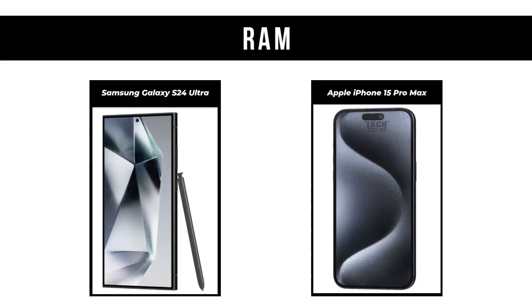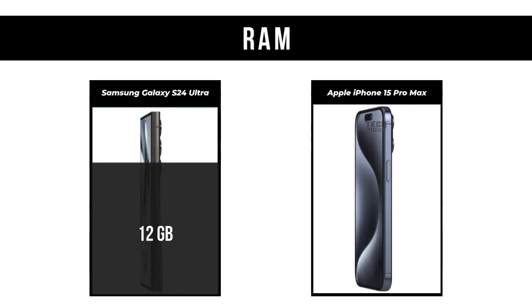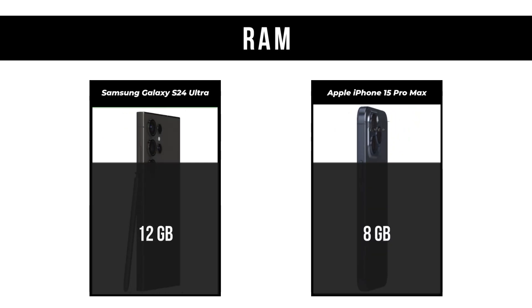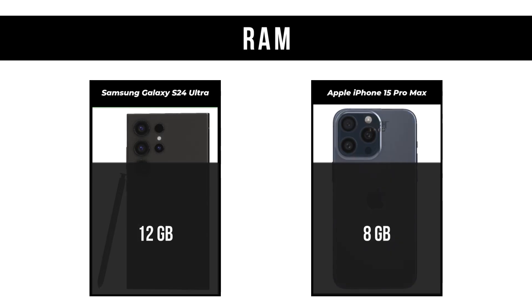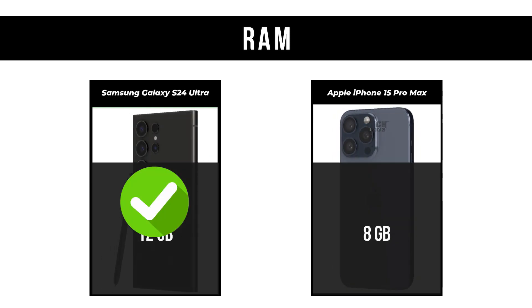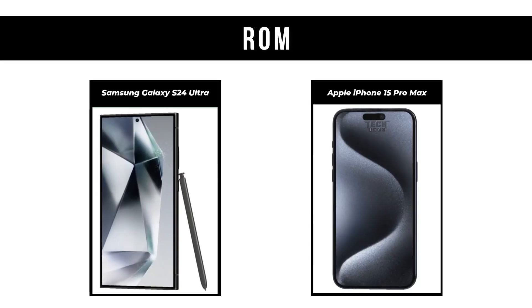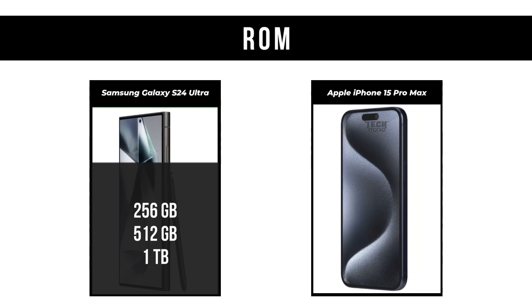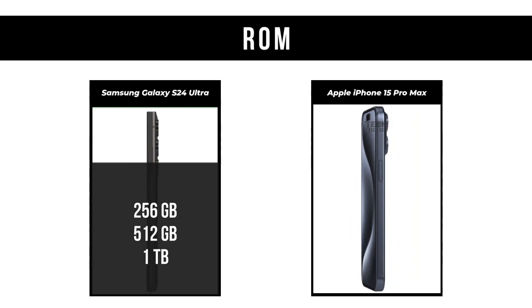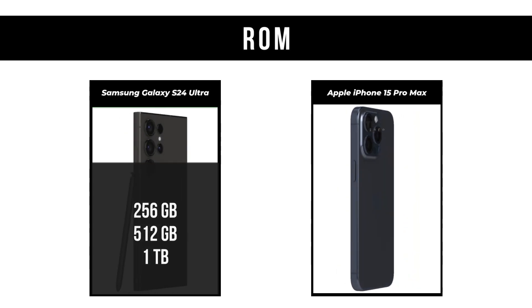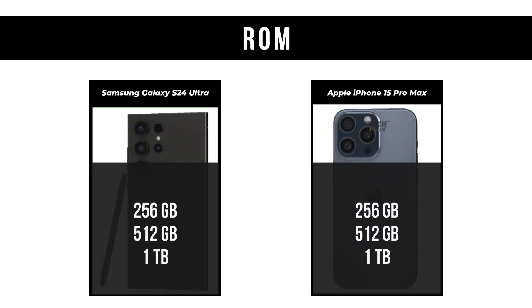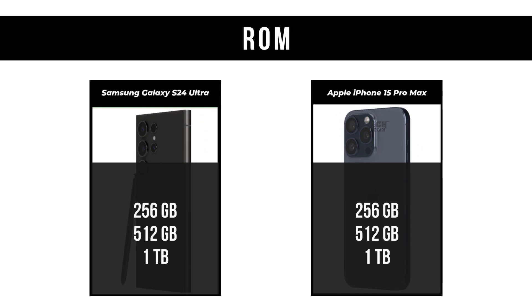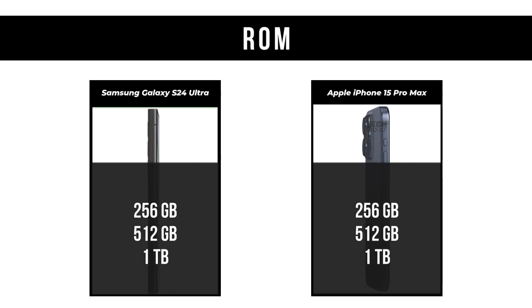RAM: Samsung Galaxy S24 Ultra is 12GB; Apple iPhone 15 Pro Max is 8GB. ROM: Samsung Galaxy S24 Ultra is 256GB, 512GB, or 1TB; Apple iPhone 15 Pro Max is 256GB, 512GB, or 1TB.